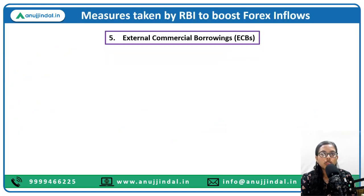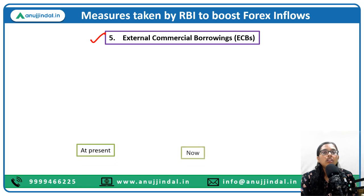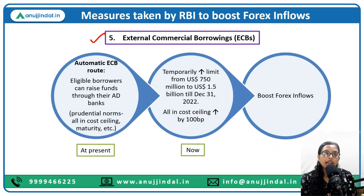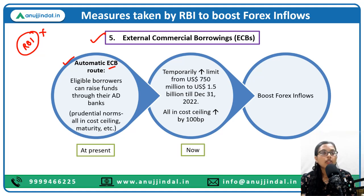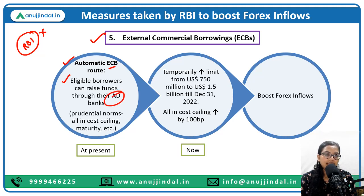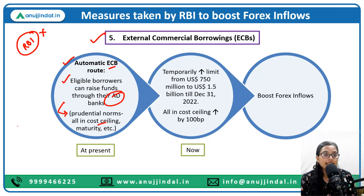The last measure taken by RBI to boost forex inflows is External Commercial Borrowings (ECB). First, the present scenario: under the automatic ECB route — meaning you do not require any permission from RBI to borrow from a foreign institution — eligible borrowers were allowed to raise funds through their authorized dealer banks. However, they had to follow certain prudential norms, including an all-in cost ceiling.